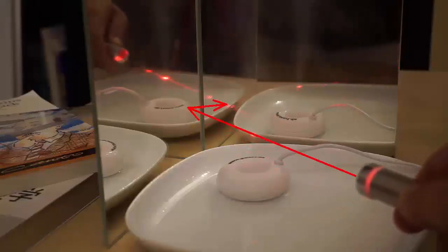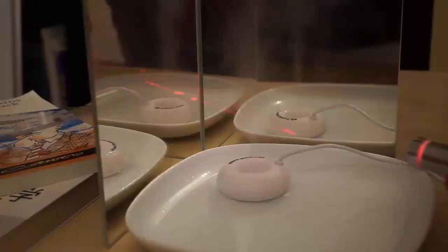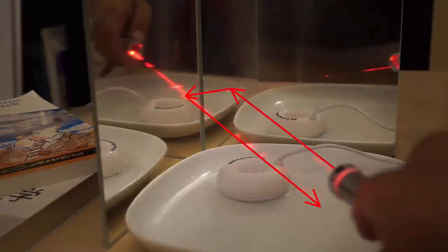Last time, we saw the corner cube reflection, but why does the ray come back to its original direction? I would like to explain that, and for that, I need some preparation.